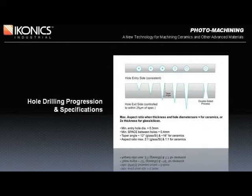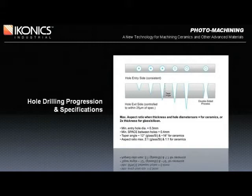Many customers have found that the taper angle is quite useful for things like wire bonding, inspection, air passage, or fluid flow. Where the entry and exit hole diameters must be the same, photo machining can be done from both sides. It will result in an hourglass effect, as seen by the diagram on the right. Here, the opening in the center of the hourglass can also be controlled to a specified diameter within the limits of the allowable aspect ratios.